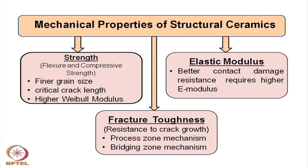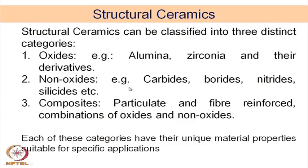There are many extrinsic mechanisms by which one can improve fracture toughness, and that can be done only through understanding of the mechanism of fracture. There are process zone mechanisms and bridging zone mechanisms that we have already discussed in our earlier lectures. Having discussed that, our focus here is on structural ceramics — the ceramic materials used for different applications where mechanical properties of different types are of relevance.